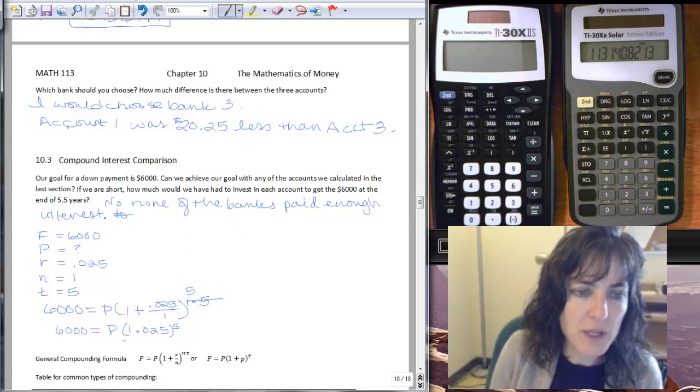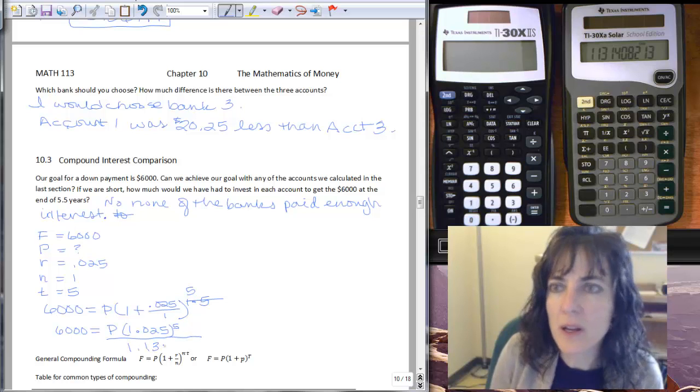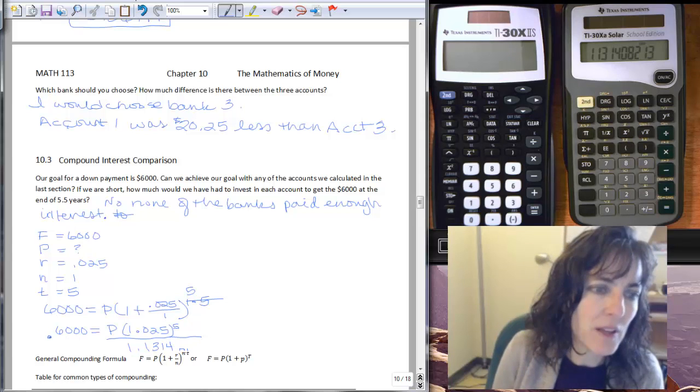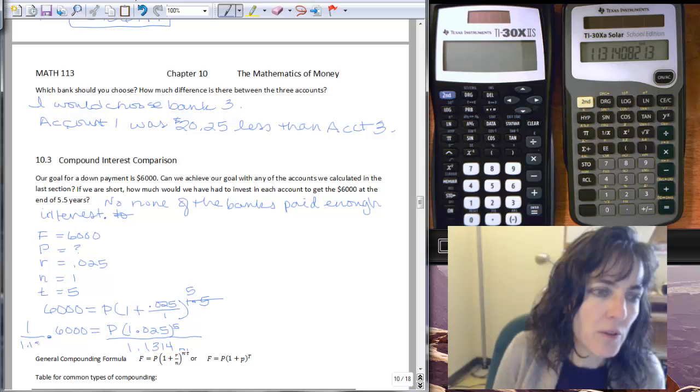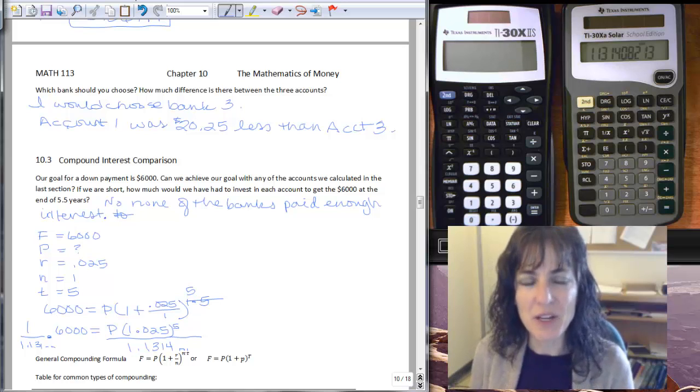And remember, what I want to do is divide both sides by that, and that's a 1.1314, and on and on. And remember, it's the same thing as multiplying by one over that value, 1.1314, and so on. So I'm just putting dot, dot, dot to signify it goes on and on.